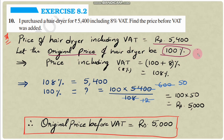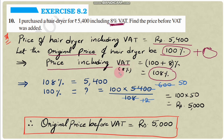To the original price (100%), we add 8% VAT. So 100% + 8% = 108%. The price including VAT is 108%, which equals ₹5400. So 108% is equal to ₹5400.